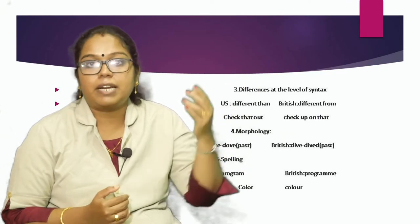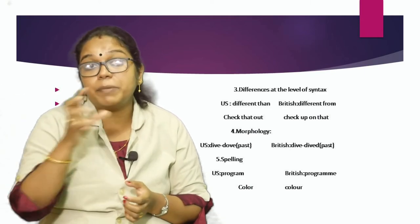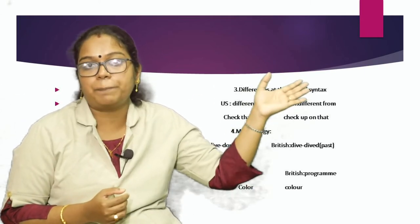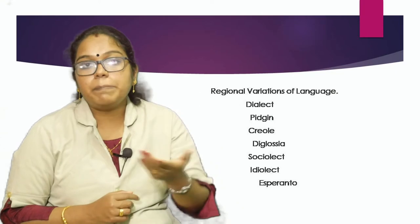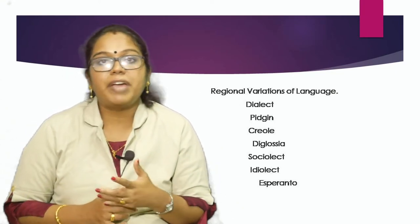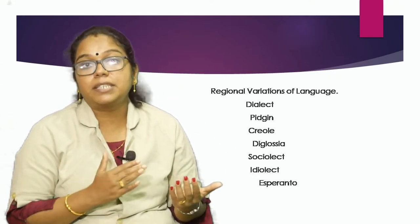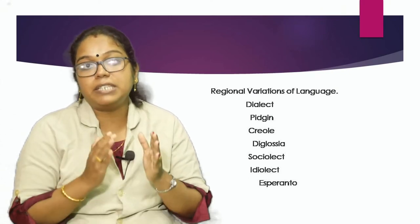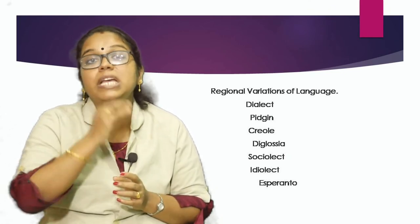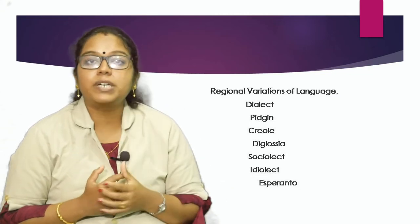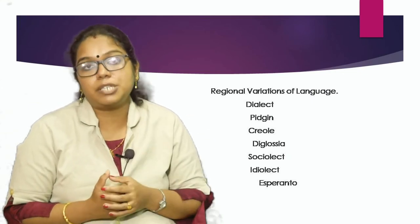At the morphological level, the past form of 'dive' in the US is 'dived', while in British English it is also 'dived'. For spelling differences: US 'program', British 'programme'; US 'color', British 'colour'. In simple words, by dialect we mean a variation or divergent form of a language which differs from other varieties only in certain features, and even then only to the extent that speakers of different dialects are mutually intelligible. Pronunciation, vocabulary, and structures of a language may vary according to region, education, and social association.